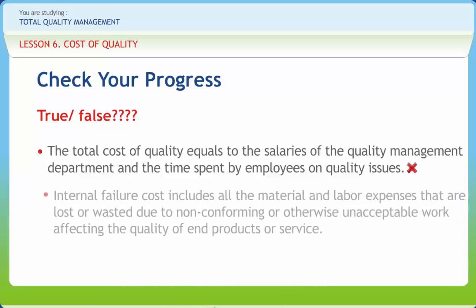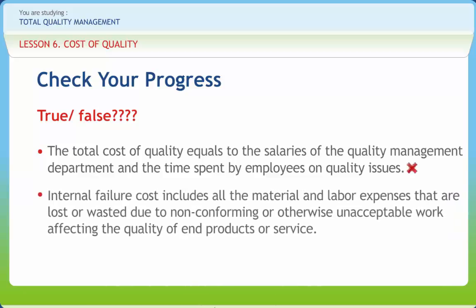Wrong. Internal failure cost includes all the material and labor expenses that are lost or wasted due to non-conforming or otherwise unacceptable work affecting the quality of end products or service. Right or wrong? Right.